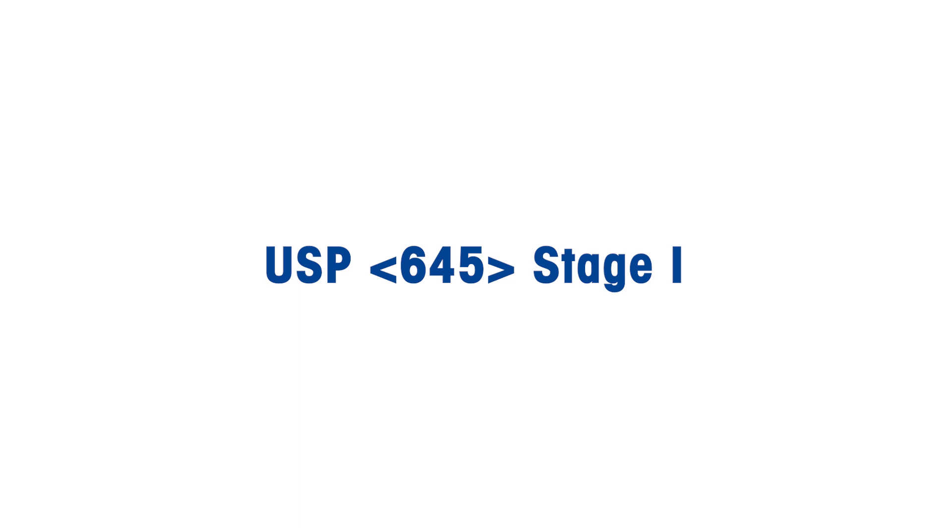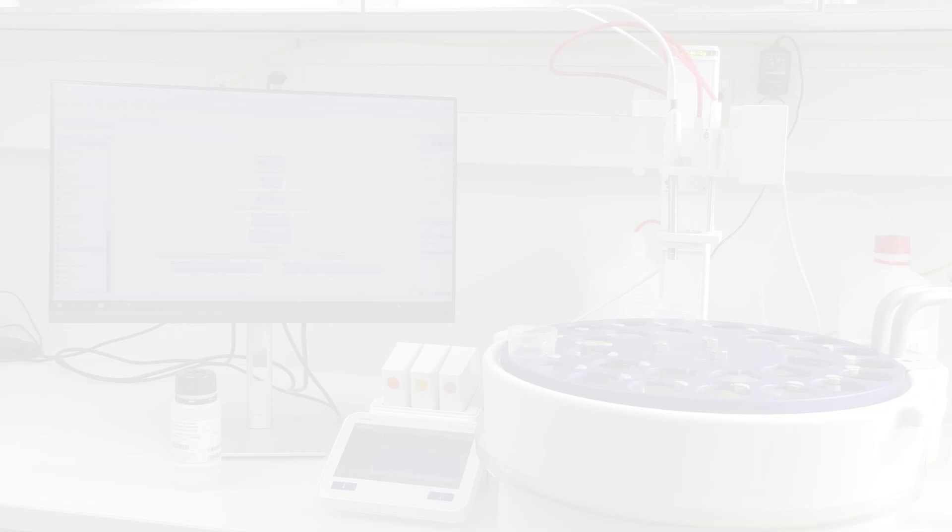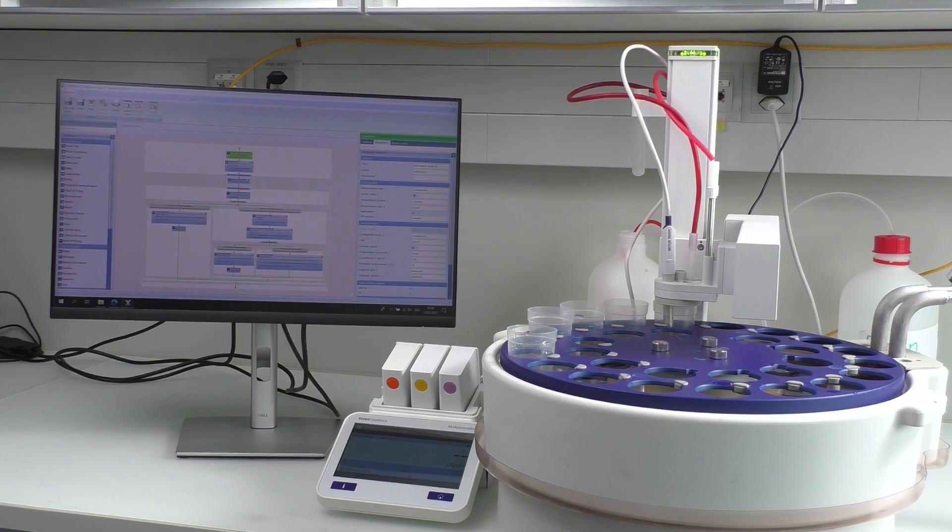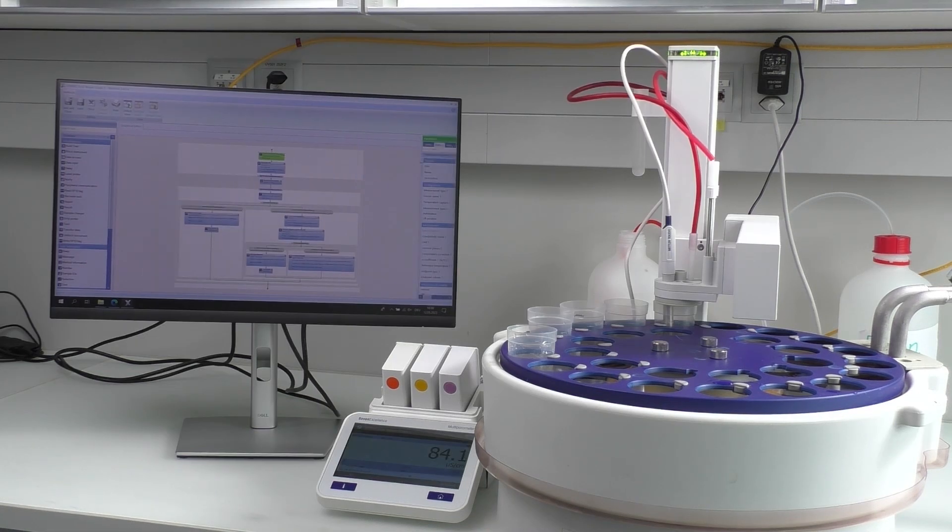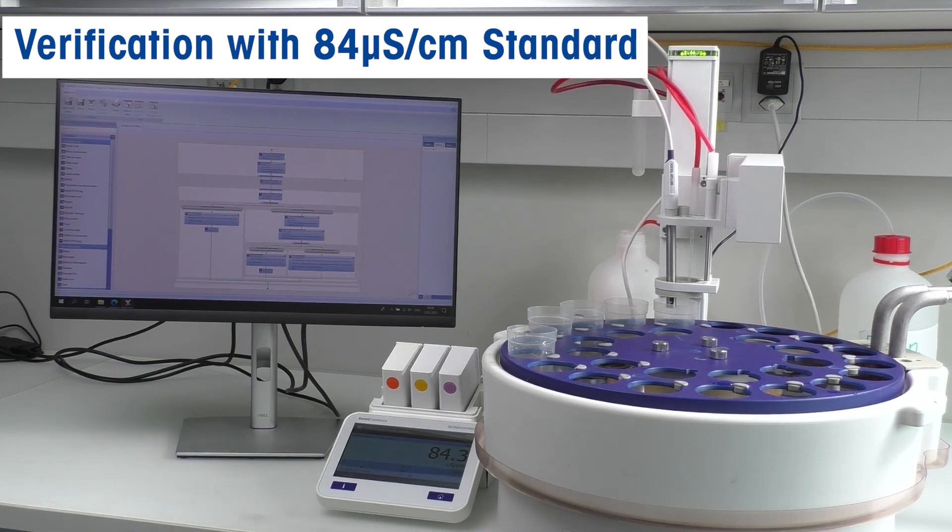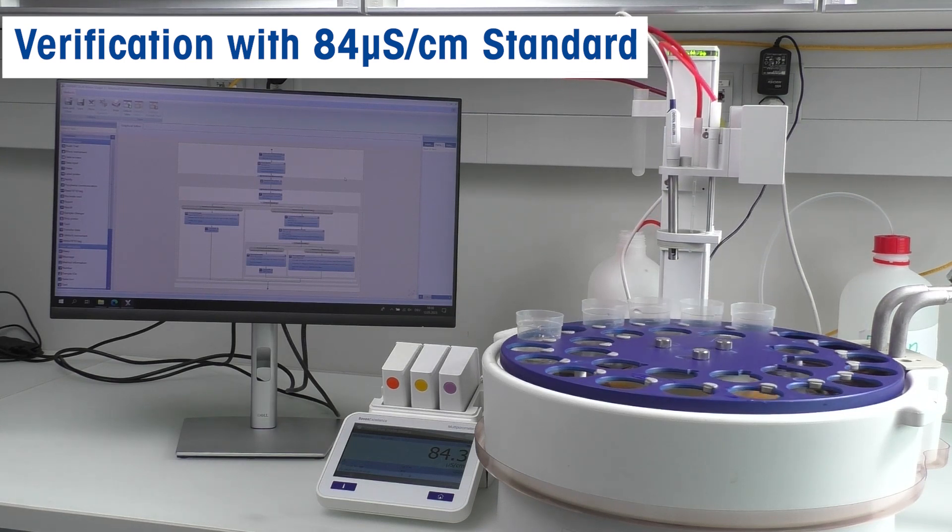Stage 1 requires determining the conductivity of water without temperature correction. As the in LAB-741-ISM sensor has a certified cell constant, we do not need to calibrate it. Only verification in 84 microsiemens per centimeter standard is required.